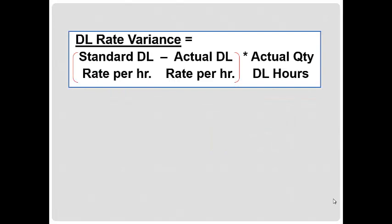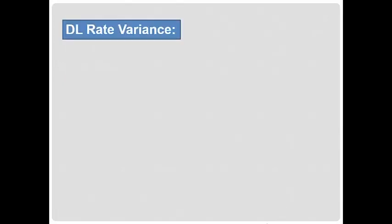Let me remind you that the direct labor rate variance is the standard labor rate minus the actual labor rate times the actual quantity of labor hours. So we know the standard direct labor rate is given to be $10.30 per hour, but we don't know the actual labor rate. That's in fact what we're trying to solve for.